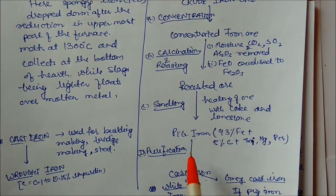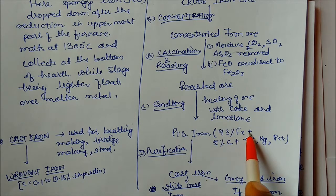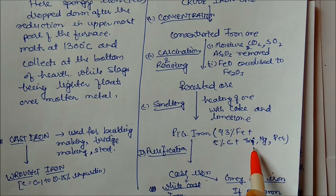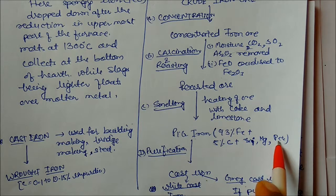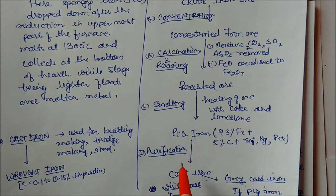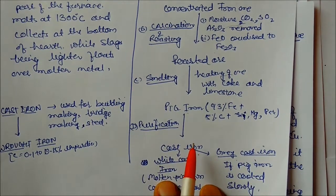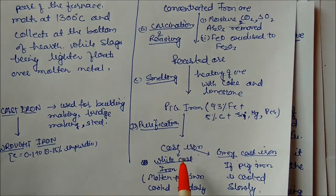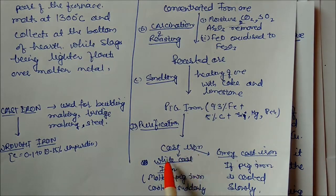During smelting, the ore is heated with coke and limestone. Pig iron consists of 93 percent iron and 5 percent carbon, plus impurities like silica, magnesium, phosphorus, etc. Pig iron requires purification.